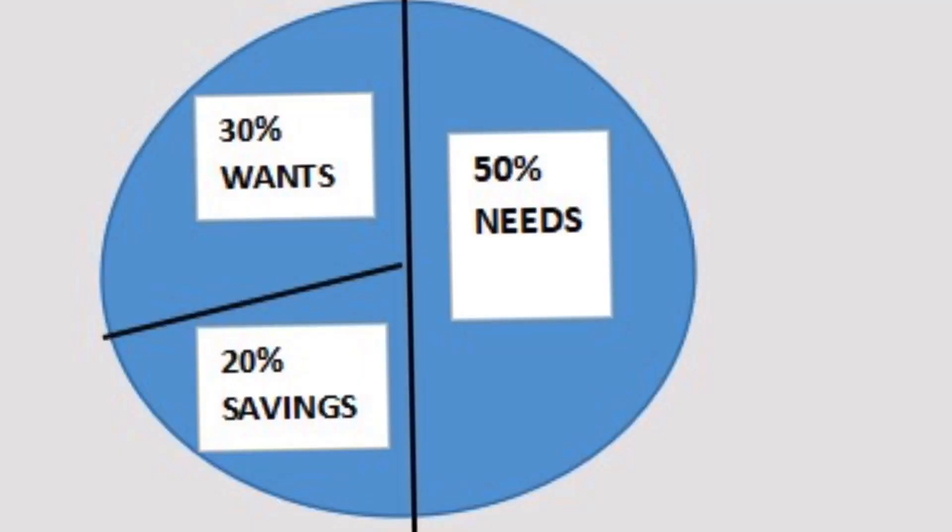The 50, 30, 20% rule is very simple. 50% has to do with your primary needs, 30% has to do with your wants, and then 20% is the savings. So let's break it down.